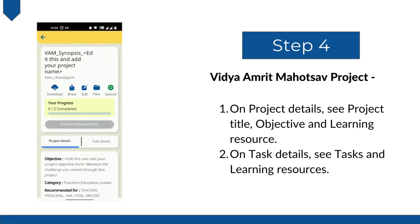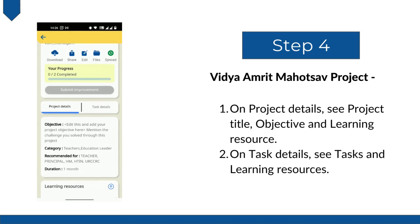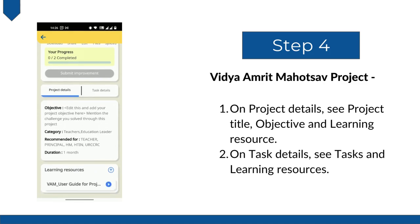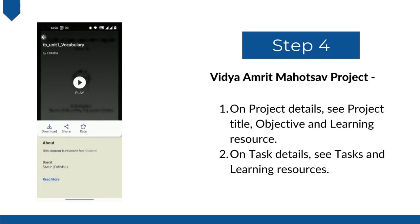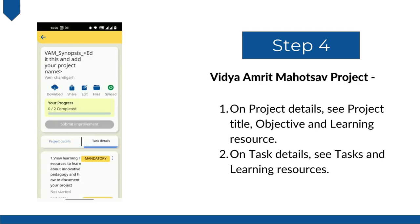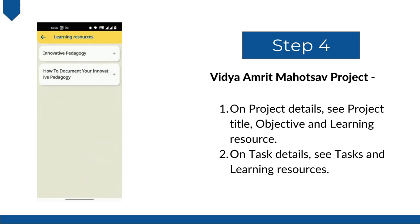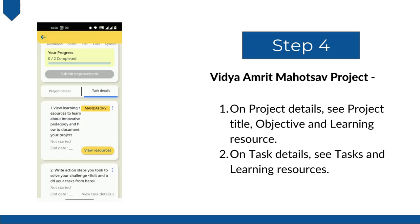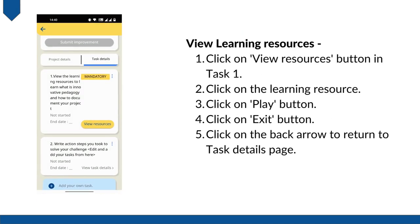The project includes a project title on top, a project objective, and a learning resource in the project details. You can access the learning resource to see how to edit the project title, objective, and tasks, and how to add tasks in your project on Diksha. Task details include two tasks. There are also learning resources in task 1 which you can see by clicking on 'View resources.' Task 1 is about learning resources, whereas task 2 is where you will add your action steps for the project.